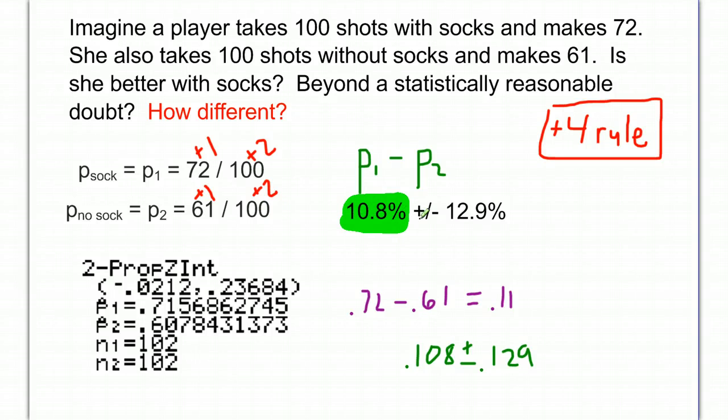So this number gives us a good estimate. This number, the plus or minus, the error, tells us how much we can really trust this number on the left. That's how you find a confidence interval of the difference of two proportions.